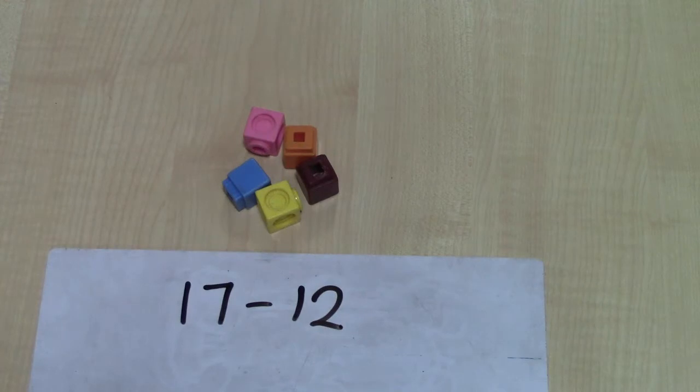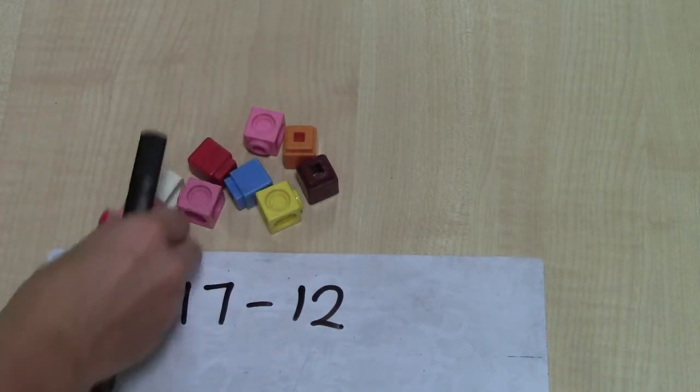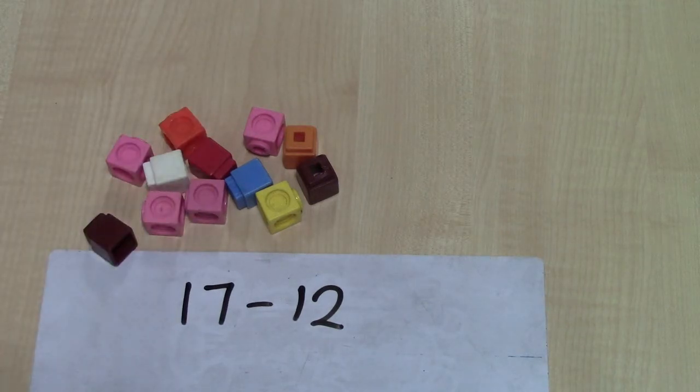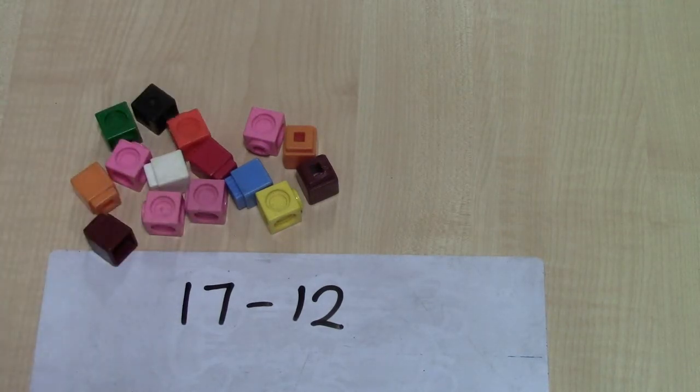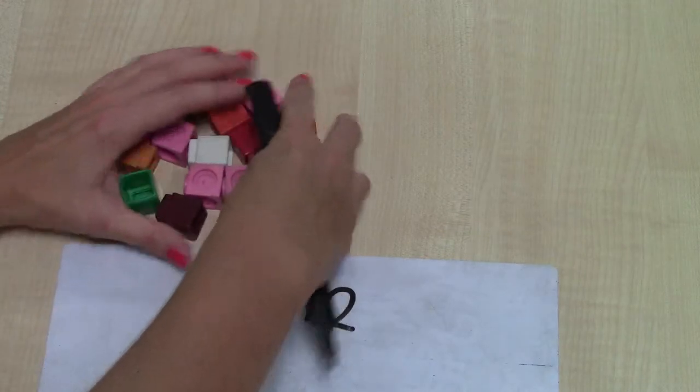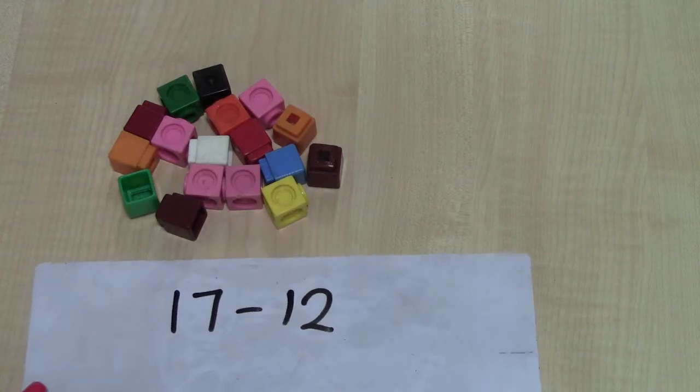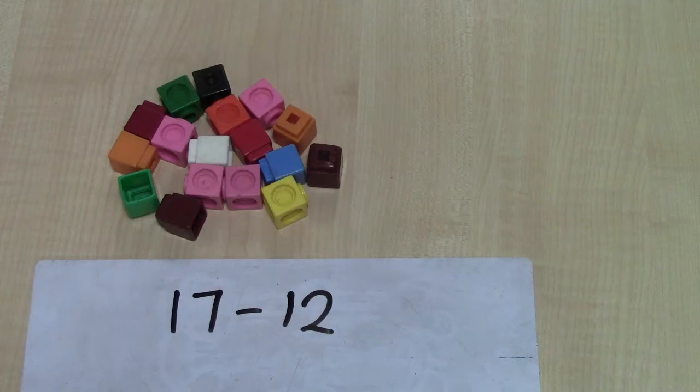I've already got five, six, seven, eight, nine, ten, eleven, twelve, thirteen, fourteen, fifteen, sixteen, seventeen. It's really difficult to see that I've got seventeen cubes here and I might have problems counting out seventeen accurately. So what could I do?